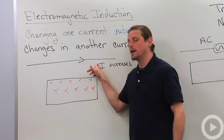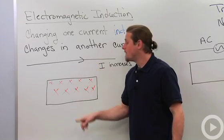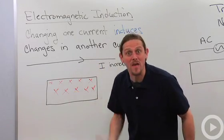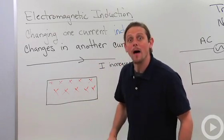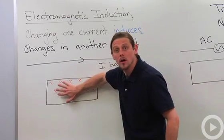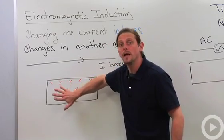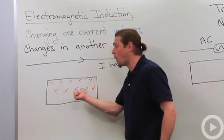This current is increasing. That means that the value of this magnetic field is increasing. That means that the magnetic flux through this loop is increasing into the board.